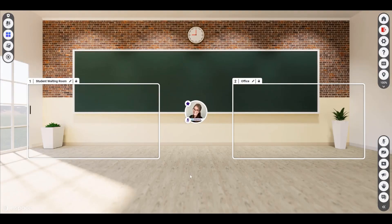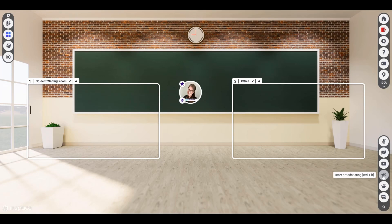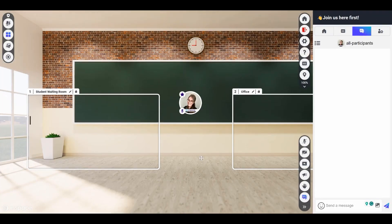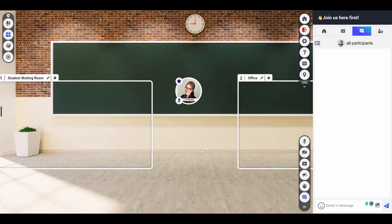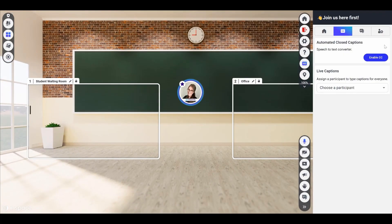When you're inside a room, you can move around and participate actively in your session. Your session host will have specific instructions for how they expect you to participate, but here are the basics: mute and unmute your microphone, turn on your camera, raise your hand, use the chat, and use your mouse or trackpad to zoom in and out on the screen.